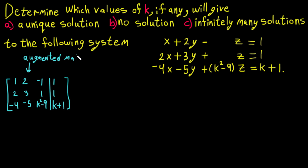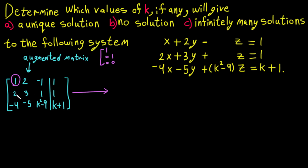Here is the leading one — the pivot entry. The entries below this column we have to make zero. We want to reduce the matrix to the form: 1, 0, 0 then 1, then 0. To do that, we perform R2 minus 2 times R1 into R2.